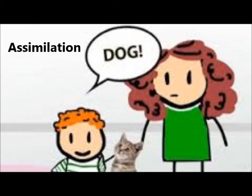The process of assimilation occurs when someone comes into contact with a new experience and tries to understand it by fitting it into a pre-existing schema. As you can see in the image, the boy is calling the cat a dog. This is explained by the boy's previously existing schema of a furry four-legged animal — in this case, a dog.